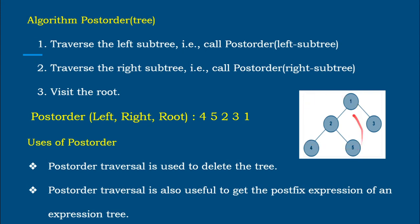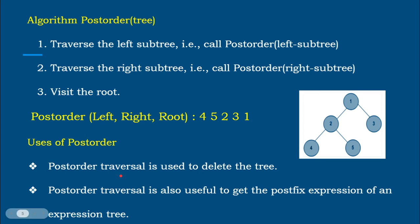The next is post-order traversal. As the name implies, the root node is visited last — in the post position. The order is: traverse the left subtree, traverse the right subtree, then visit the root. For the same sample tree with nodes 1, 2, 3, 4, 5: start from the root, go left all the way down to node 4. Then go right to node 5. Then visit the root of that subtree, node 2. Then go right to node 3, and finally the overall root, node 1. The post-order result is 4, 5, 2, 3, 1.